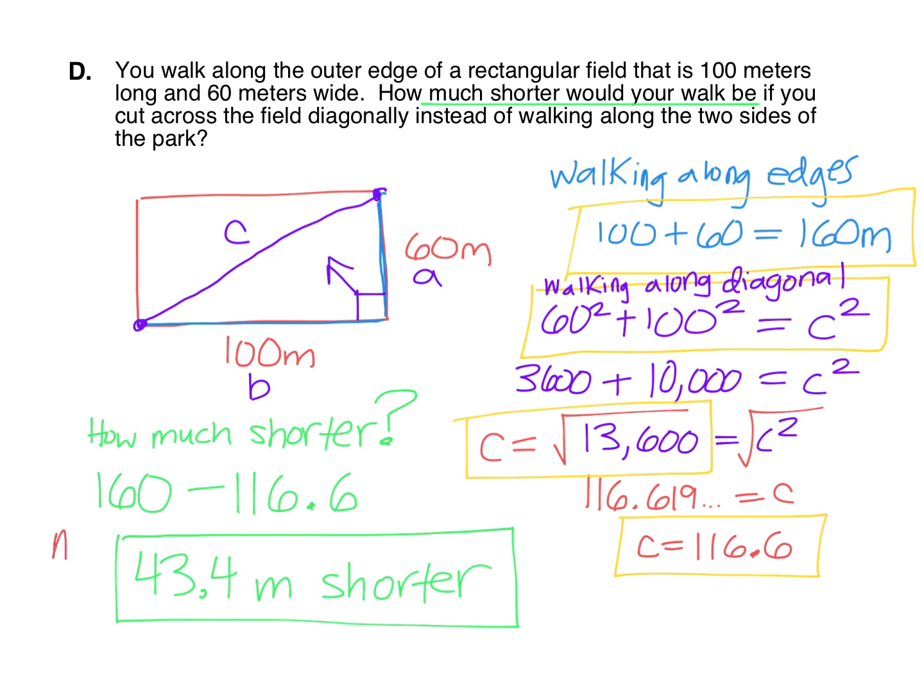And that's the final answer that you need to type in the answer box. For how much shorter, you can show this calculation right here, what two numbers you're subtracting. And then in the answer box, you'll type out that answer of 43.4 meters shorter. So everything that I currently have boxed in yellow is what you're going to type into the boxes in your interactive notebook.